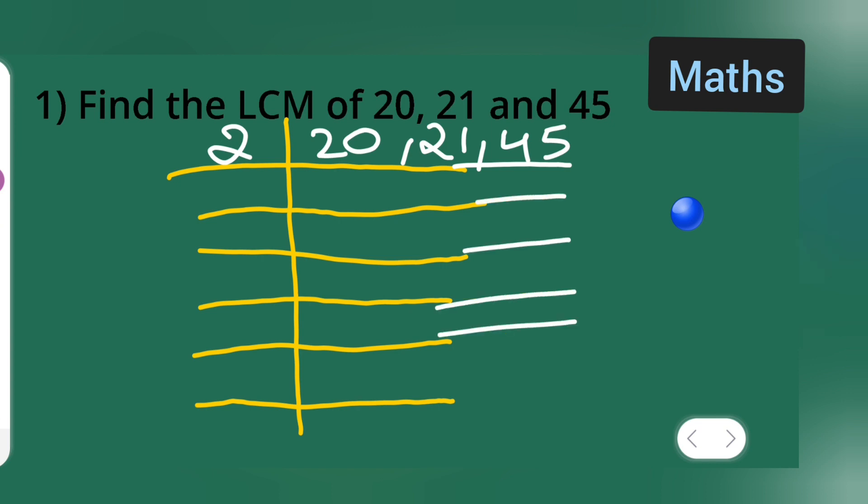Okay, let me extend it. So, here 2, 10s are 20. Keep 21 and 45 as it is. Okay.